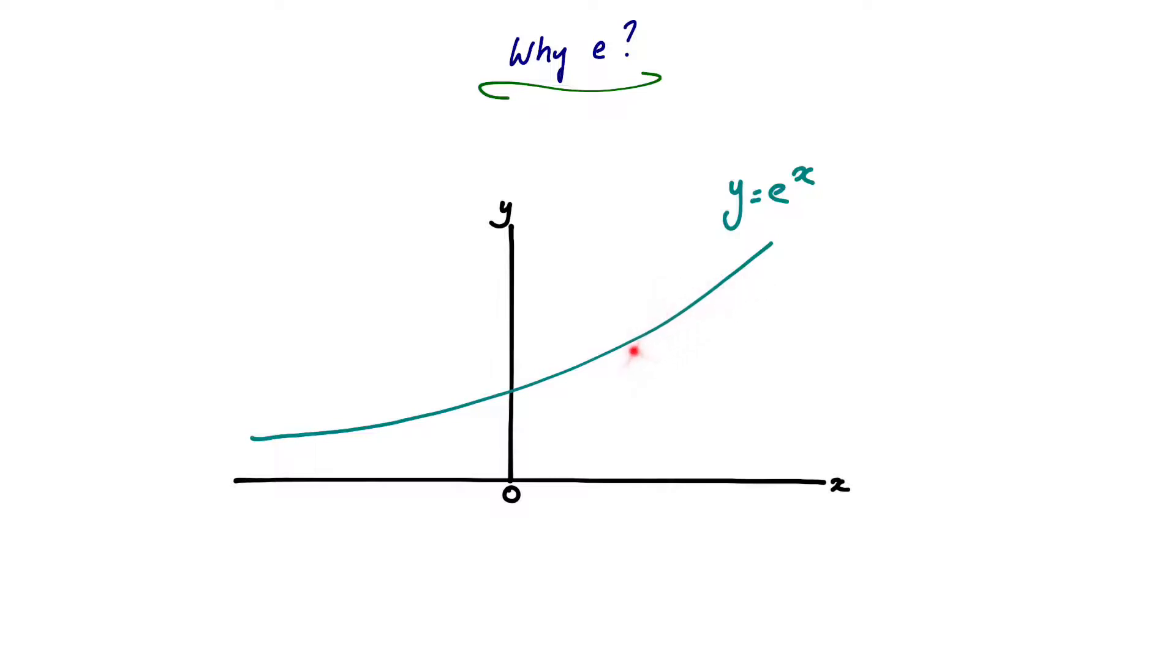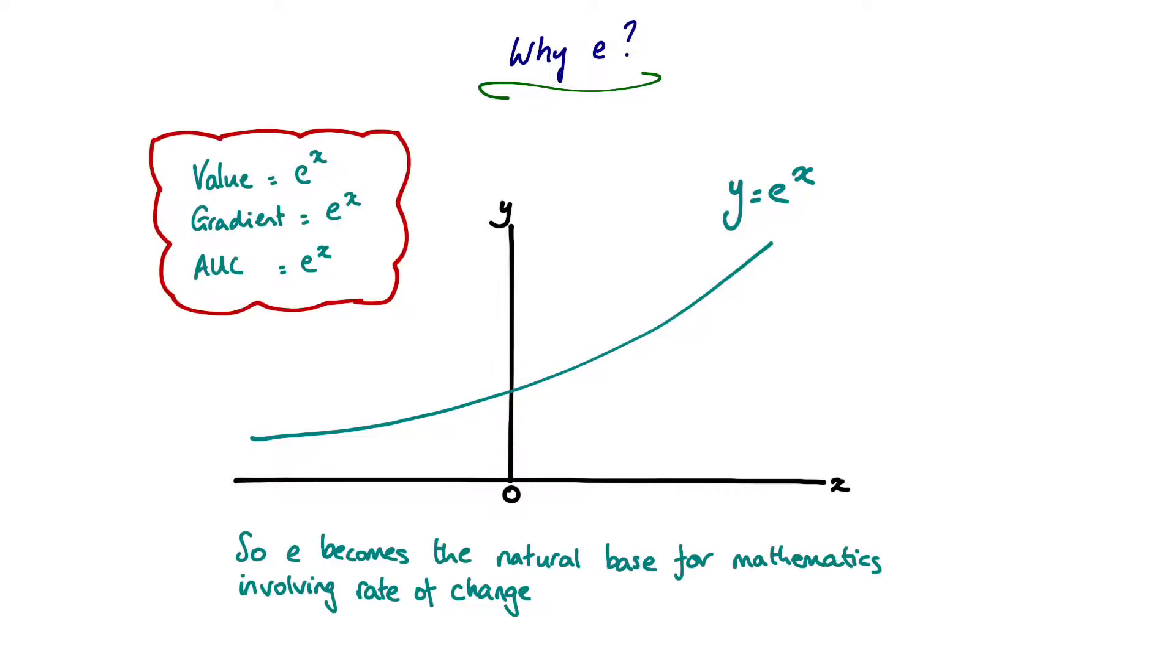If you were to draw a line down to the X axis and work out the area under the curve back to negative infinity, that would also be given by E to the X. Another way of saying that is the function of E to the X differentiates and integrates to itself without changing, so it becomes a much simpler way to describe the mathematics involving rates of change.